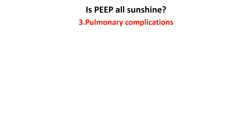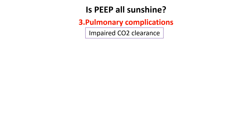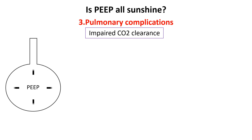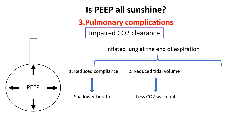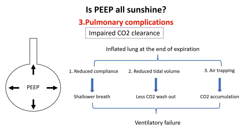High PEEP can impair carbon dioxide clearance by reducing the efficiency of air movement in and out of the lungs. This occurs because high PEEP keeps the lungs partially inflated at the end of exhalation, leading to several effects. First, it can reduce lung compliance, making the lungs stiffer and harder to expand during inspiration, resulting in shallower breaths. Second, it can decrease tidal volume, reducing the amount of air exchanged with each breath and limiting carbon dioxide removal. Lastly, it can cause air trapping, where incomplete exhalation leads to accumulation of carbon dioxide in the lungs, causing carbon dioxide to build up in the bloodstream and leading to ventilatory failure.